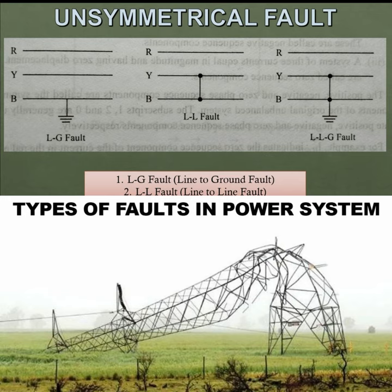For example, R-phase and B-phase contact each other — that is an LL Fault. The third type is the LLG Fault. LLG means Double Line to Ground — two lines are in contact with the ground. That is called an LLG Fault.